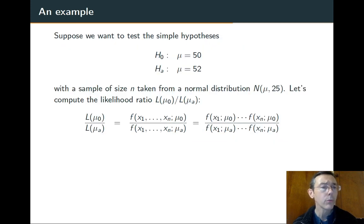So let's go through an example and try and make this concrete in terms of how we would actually apply this. So here are some simple hypotheses: μ = 50 versus μ = 52. The basic idea is we'd like to distinguish between the two of these.